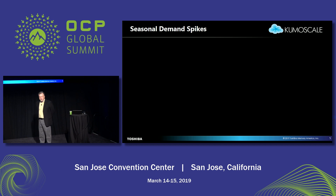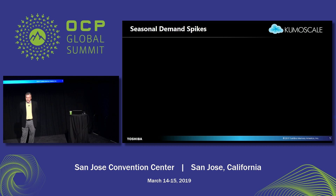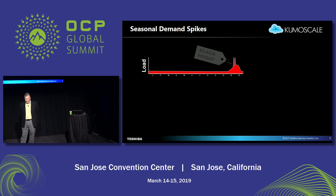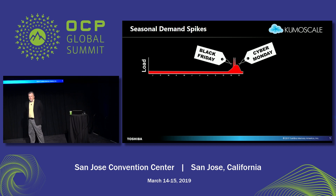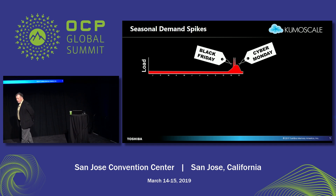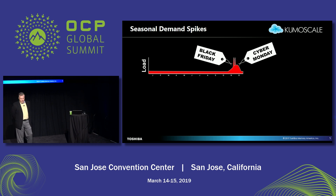Seasonal demand spikes are an interesting thing. The KumoScale customer base includes consumer-facing applications delivered over the web to billions of users, and they tend to have seasonal spikes that are pretty profound. Obviously, if you're a marketplace, Black Friday and the Christmas season is when things hit the fan for you. Most of these customers, even though they're quite sophisticated and run many big data centers of their own, their technique for handling these spikes today is to just buy more machines and let them sit idle all year, and then fire them up for Christmas.